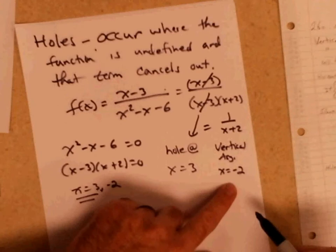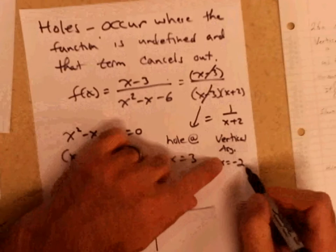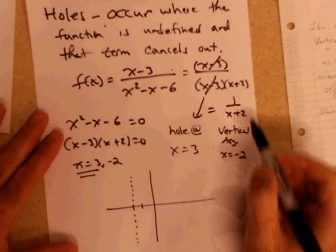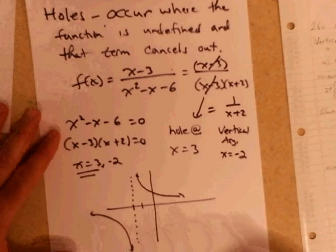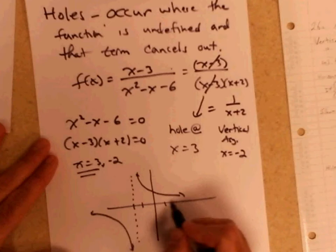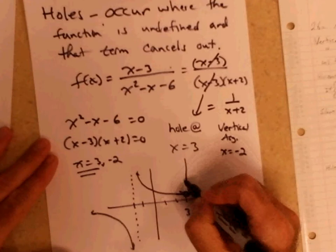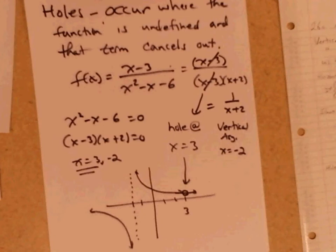So you only have one vertical asymptote at negative 2. The graph has a vertical asymptote at negative 2 and looks something like this. To address the hole, there's a hole at x equals 3, so you put a hollow point there to represent that the function is undefined at that moment. Don't include that point in your answers.